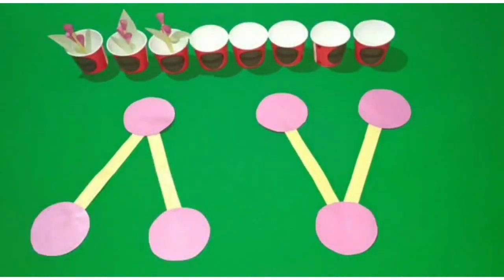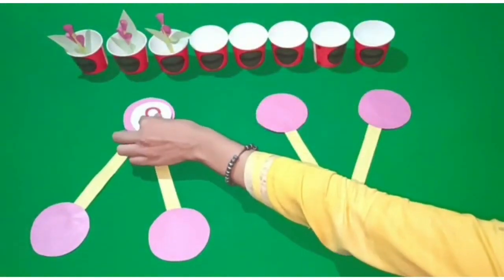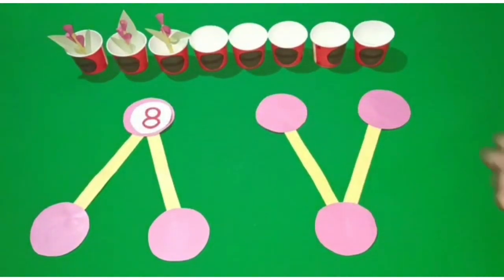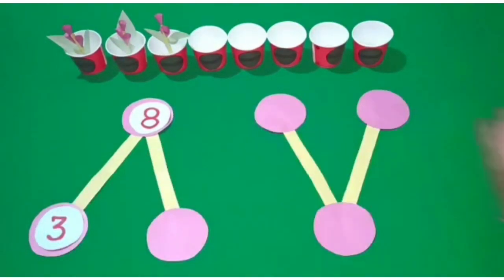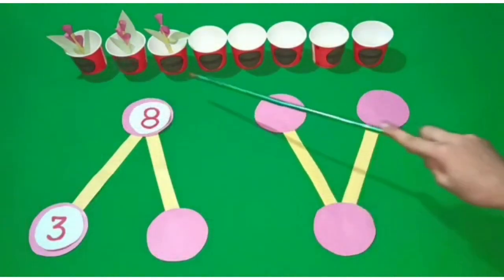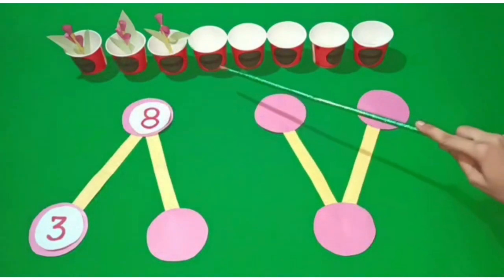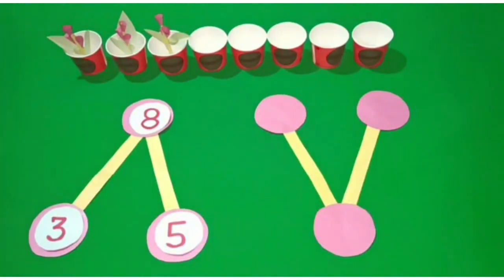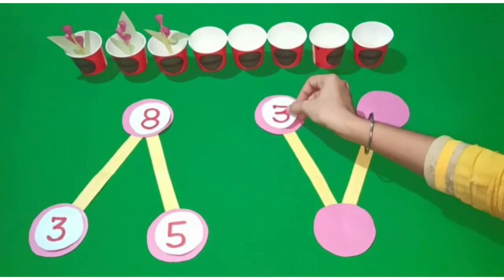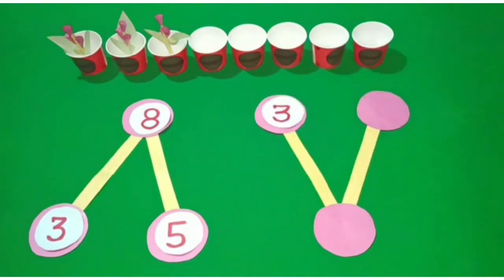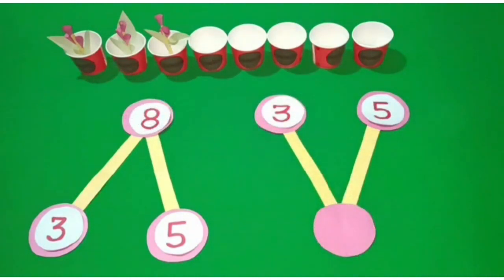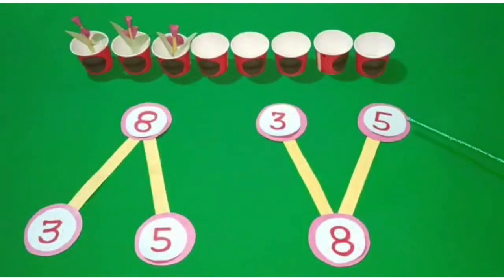Students, there are all 8 pots. There are flowers in 3 pots — 3 out of 8 pots. So see, how many pots do not have flowers? Yes — 5. No flowers in 5 pots. There are flowers in 3 pots and no flowers in 5 pots. How many pots are there? There are 8 pots. 3 and 5 are 8 in all.